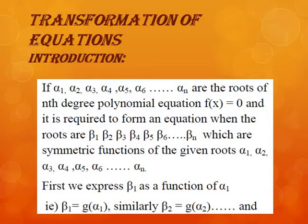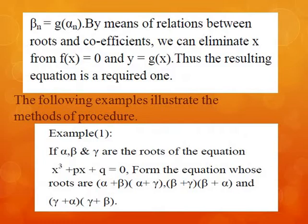That is, if α₁, α₂, ..., αₙ are the n roots of the nth degree polynomial f(x) = 0, then it is required to find an equation whose roots are β₁, β₂, β₃, ..., βₙ, which are symmetric functions of the given roots α₁, α₂, ..., αₙ. For that, first we need to express β₁ as a function of α₁, that is we write β₁ = g(α₁), similarly β₂ = g(α₂), and βₙ = g(αₙ). By means of relations between roots and coefficients, we can eliminate x from the equations f(x) = 0 and y = g(x).